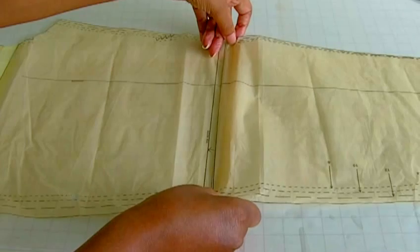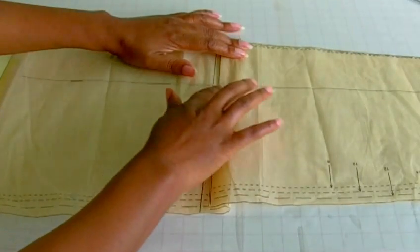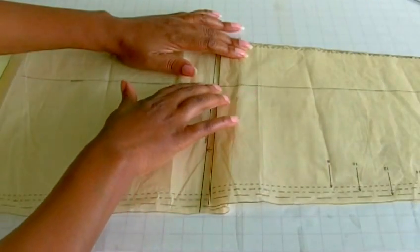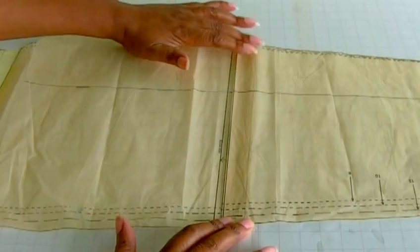So I bring it forward to the amount required, making sure the straight of grain line is straight. As you can see that point there it is straight, and then fold it like so.